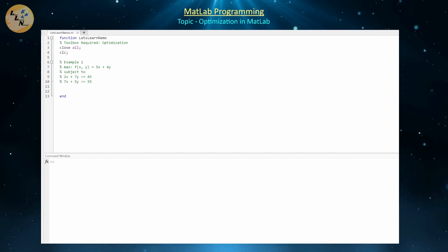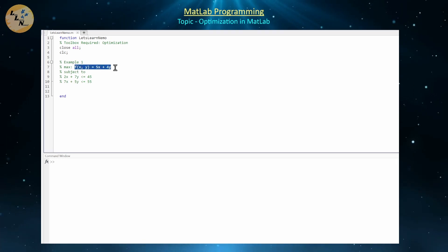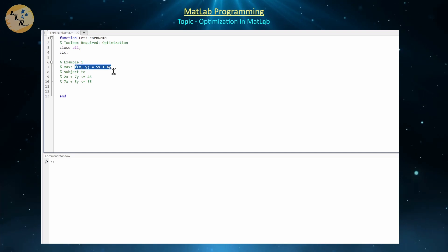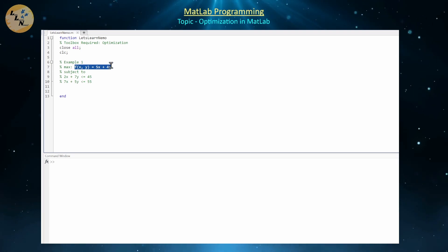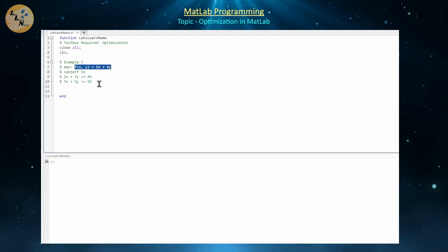The first problem we want to look into is a simple linear programming problem. For example, let's assume we have the objective function f = 5x + 4y, which we seek to maximize, subject to the constraints: 2x + 7y ≤ 45 and 7x + 5y ≤ 55. Both variables x and y have the restriction that x, y ≥ 0.